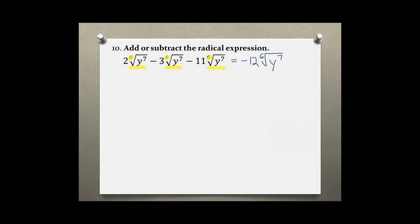Now we are not done because if you look at the 6th root of y to the 7, you could simplify that. If we split that up into its perfect 6th root and its non-perfect.